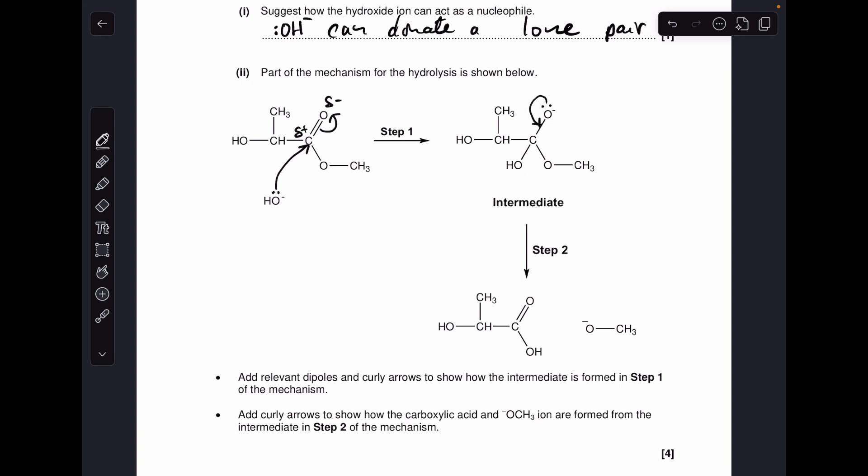So that explains how that's formed. But we also need to get rid of this here. And the way that happens is we take a curly arrow from the CO bond, middle of the bond ideally, onto that oxygen.